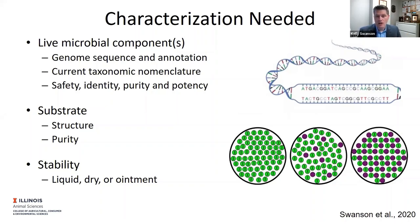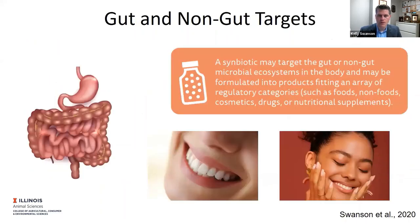A couple other points: while the gut gets the most focus, the paper does say that whether it's the oral cavity, skin, or vaginal tract, there are several targets for symbiotics — the term doesn't only apply to the gut. Also very important is the host species in mind. Whether you're talking about humans, companion animals, horses, cattle, sheep, or pigs, you need to think about who you're trying to benefit. The combination of microbe and substrate, the dosage — all of those are going to be very important and probably different for each target species.